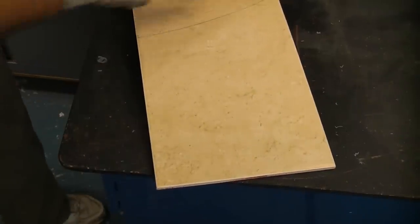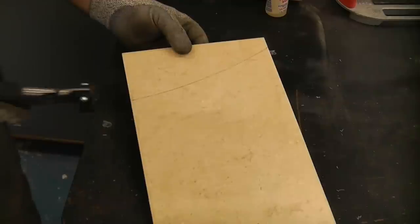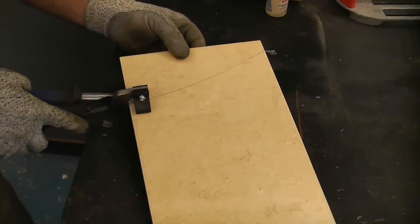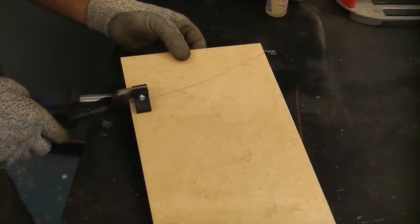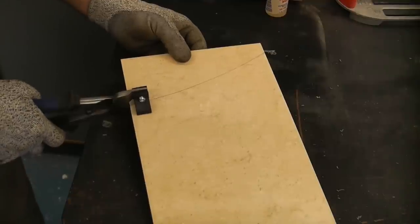Now just turn the tile around that way because it's easier breaking from this side than that side. We'll then just take the pliers, get them in the correct position for breaking that scribe, and then we'll apply firm pressure to the handles.